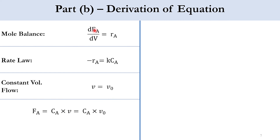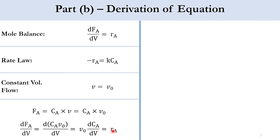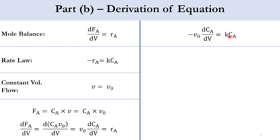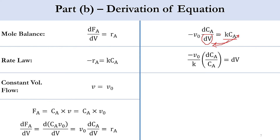Differentiating FA = CA·V0 with respect to V, since V0 is constant it comes out of the derivative, giving V0·(dCA/dV) = rA. Since rA = −k·CA, multiplying by negative sign gives −V0·(dCA/dV) = k·CA. Rearranging to separate variables: −(V0/k)·(dCA/CA) = dV, ready for integration.